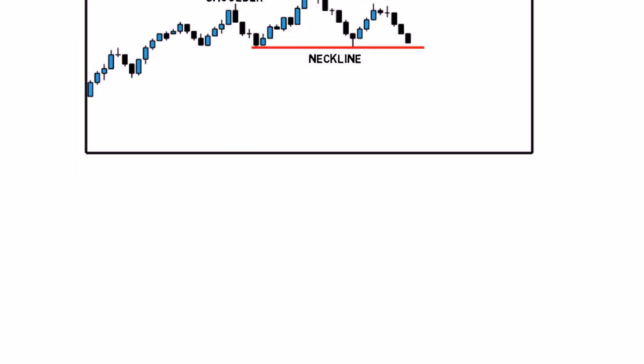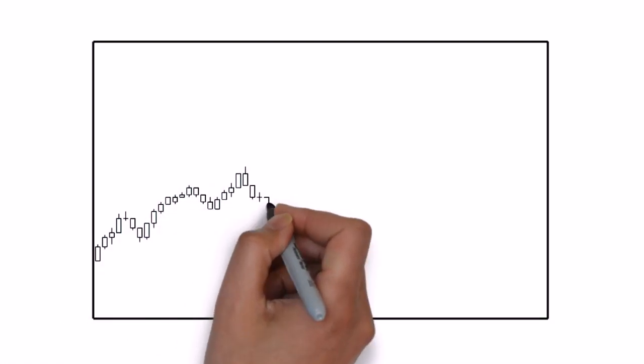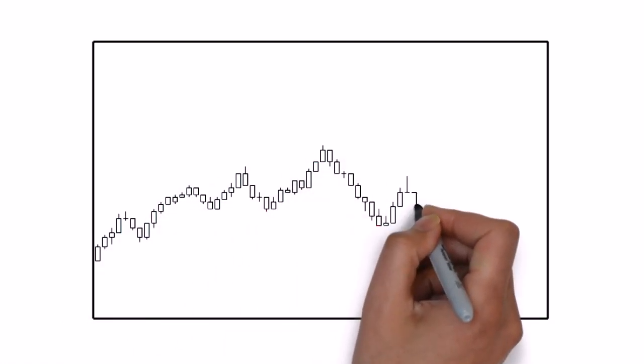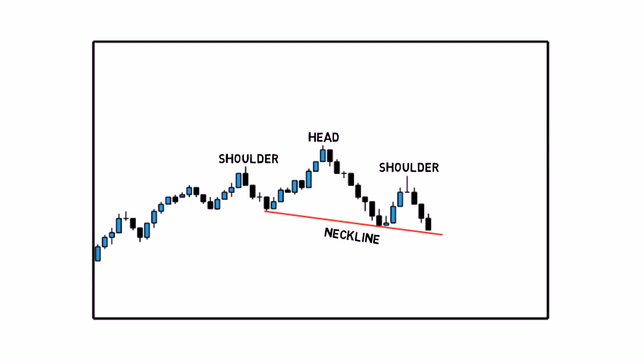The third is a downward sloping neckline. This one produces the most reliable reversal signal, as it has already managed to make a lower low.